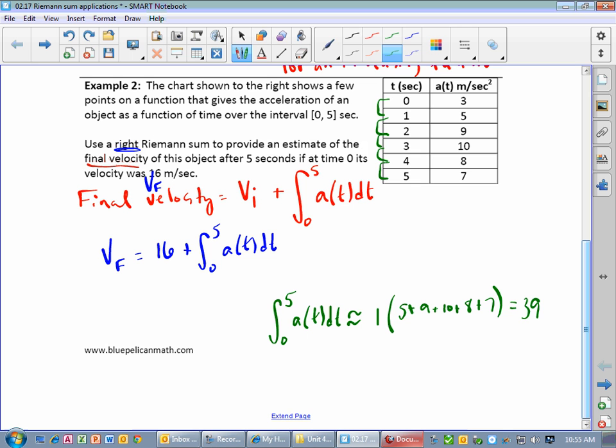And notice again, our units here, this was our seconds times meters per second squared. So we end up with meters per second. And this is the accumulated amount of velocity change. This is equal to 39. So our final velocity will be 16 plus 39. Actually, it's not equal to, it's approximately 16 plus 39, or 55 meters per second.